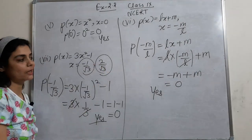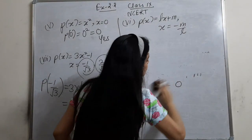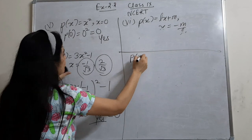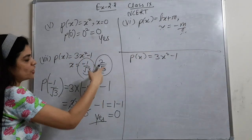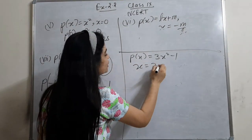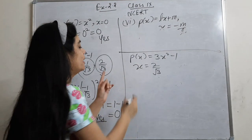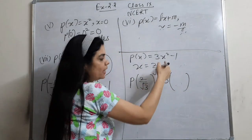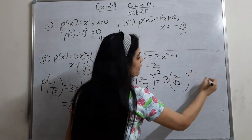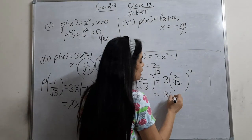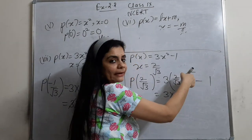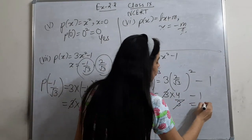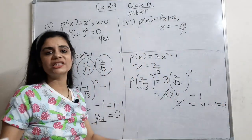Now check x = 2/√3 in p(x) = 3x² - 1. Put 2/√3 in: 3 into (2/√3)² minus 1. That's 3 into 4/3 minus 1, where root 3 squared is 3, so 3 cancels with 3, giving 4 minus 1, which is 3, and 3 is not equal to 0. Therefore, no — x = 2/√3 is not a zero.